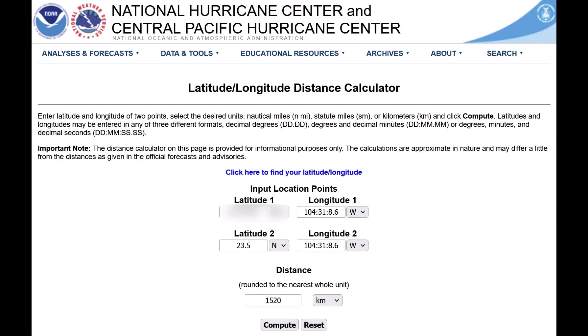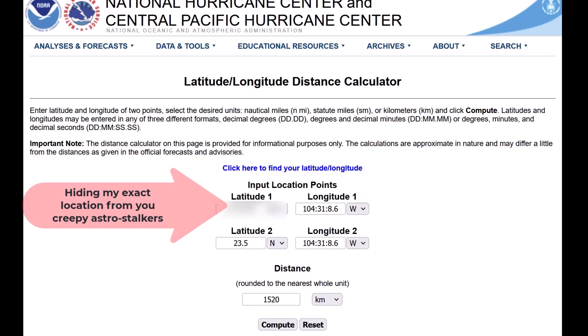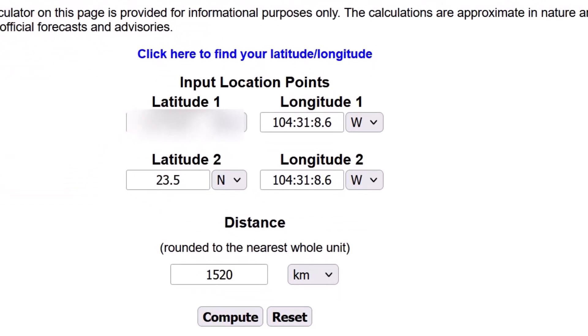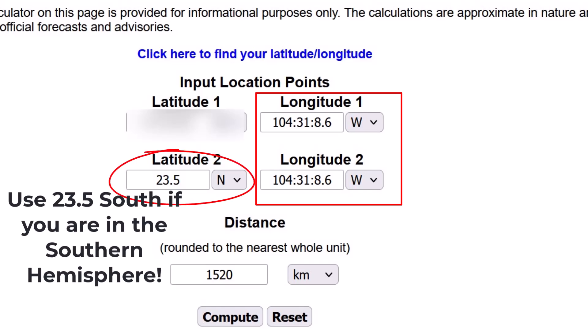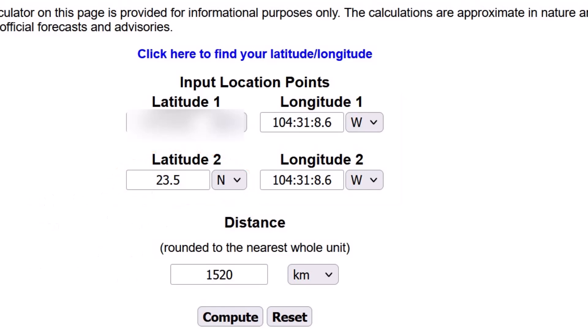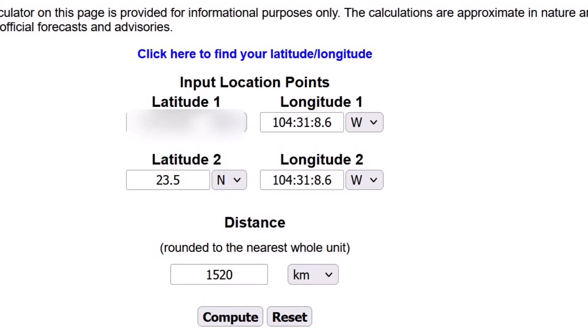I use the NOAA latitude longitude calculator it does a great job. Simply put in your coordinates for your observing location and then for the second location reuse your longitude but we want the tropic of cancer as our latitude so 23.5 goes here. Make sure you select kilometers from the drop down menu hit compute and the result is 1520 kilometers for me.